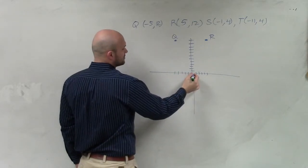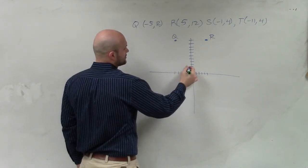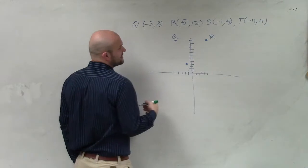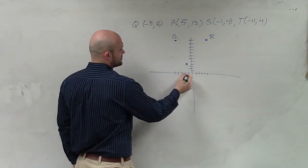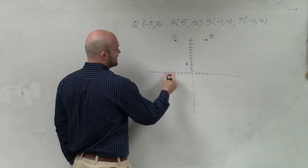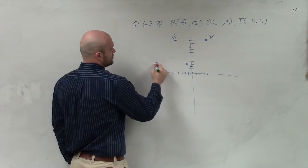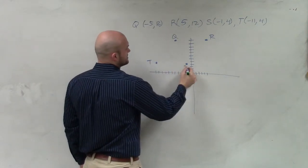S is negative 1, 4. Negative 1, 4. 1, 2, 3, 4. And T is negative 11, 4. 1, 2, 3, 4, 5, 6, 7, 8, 9, 10, 11. T, and that's S.